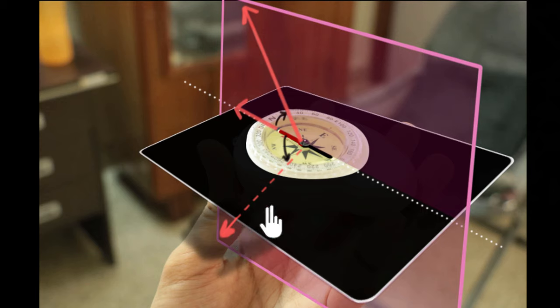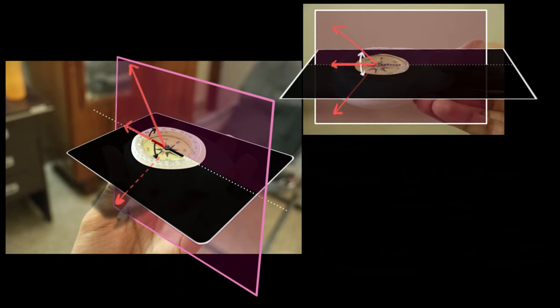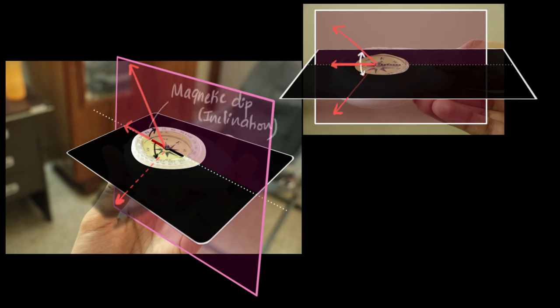This is a little hard to see from this angle, so let me show you another angle. If your compass shows this way, your magnetic field can be above or below at some angle. This angle made by the Earth's magnetic field with respect to the horizontal is what we call magnetic dip or inclination. It basically tells you how much the magnetic field is dipping with respect to the horizontal.